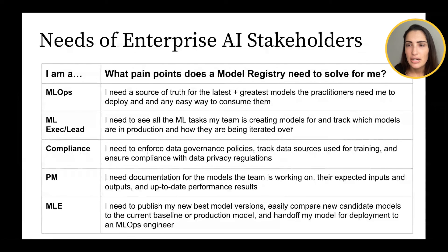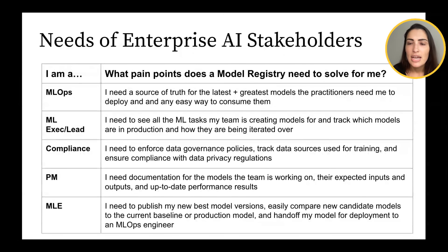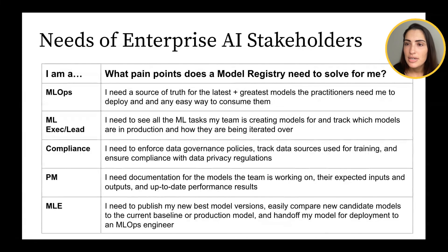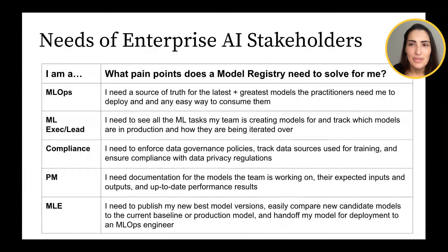There are also compliance, legal, and security stakeholders for whom lineage is really important — they want assurance that the full history of the model, including metadata, which libraries were used, and what pre-processing happened, can all be traced. Then there's the ML exec or lead who wants a view of all the models a team is working on — experimentation is messy, but what they really need to see are the published versions. And there's the product manager, who's constantly looking for documentation on what models the team is working on, up-to-date performance, and expected outputs.